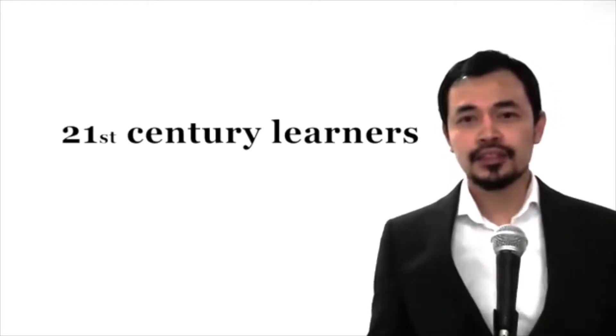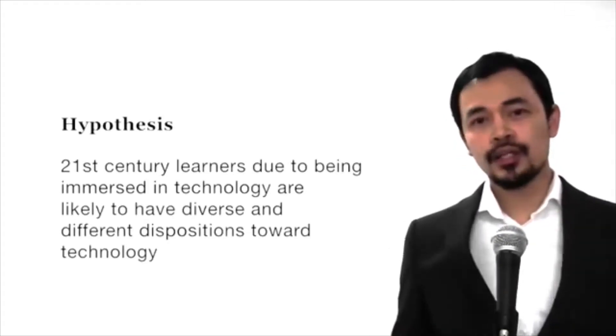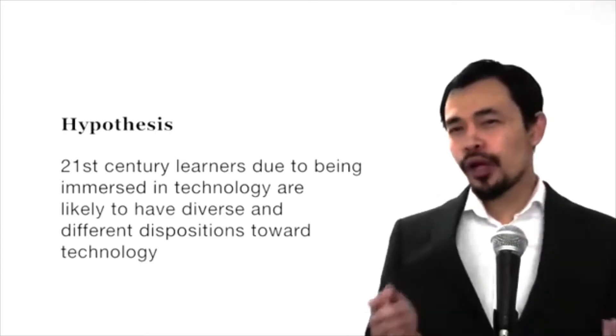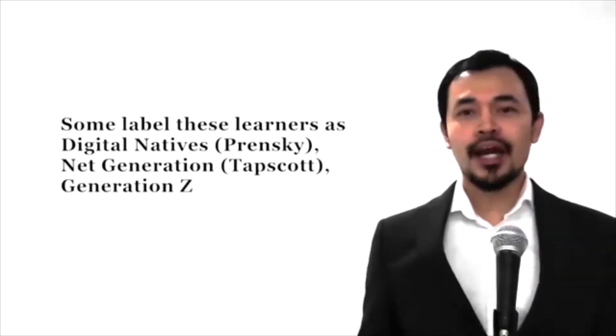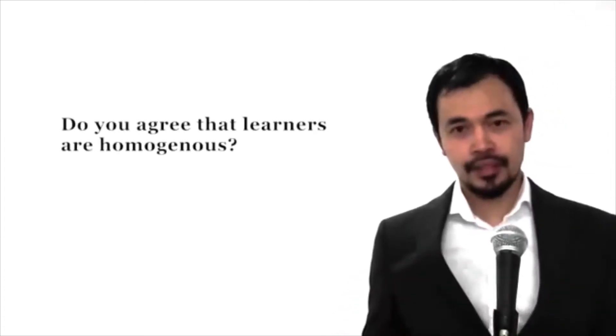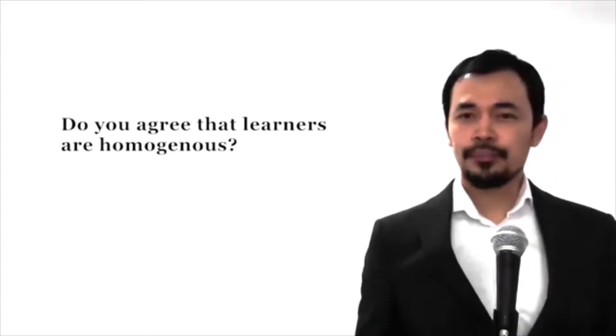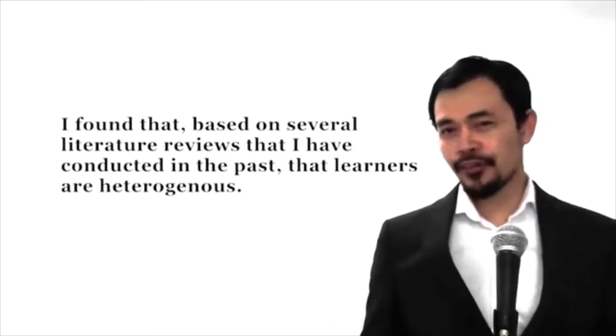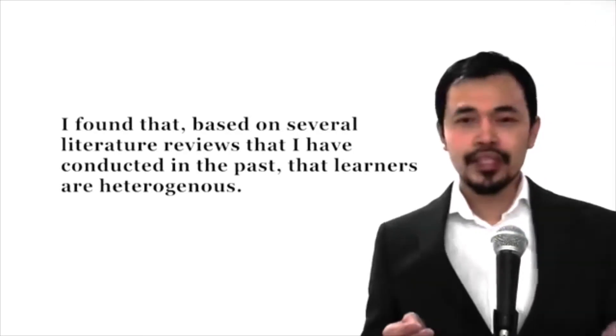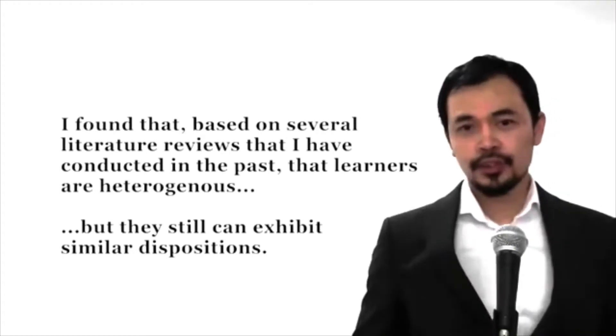These 21st century learners — online learners being a subgroup — are likely to have different preferences and dispositions towards learning with technology. Some research coined these learners as digital natives, Generation Z, the next generation, because of how they are supposedly more predisposed towards using online technology. To me, this is a sweeping generalization — that learners are more or less the same, that learners are homogenous. I personally believe that learners are very much different, that learners are heterogeneous. However, I also hold the theory that learners who share similar characteristics may exhibit similar dispositions towards learning online.